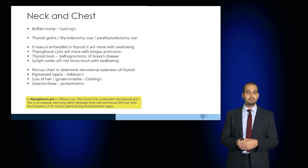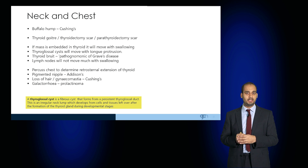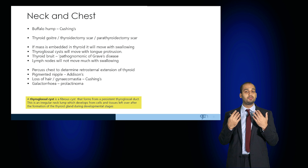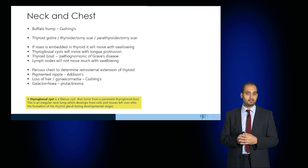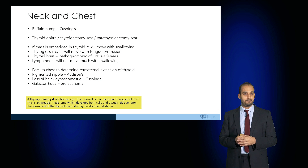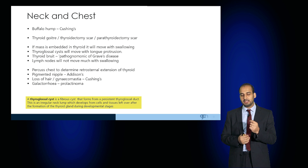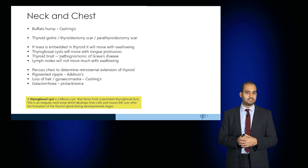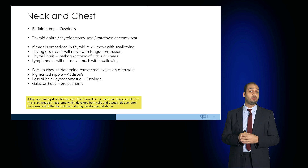Hyperparathyroidism may be primary, secondary, or tertiary. If a mass is embedded in the thyroid, this will move with swallowing. A thyroglossal cyst will move with tongue protrusion. A thyroid bruit is pathognomonic of Graves' disease. Lymph nodes do not move with swallowing.